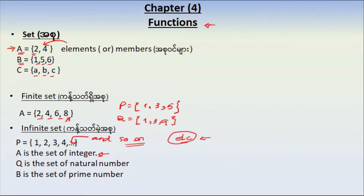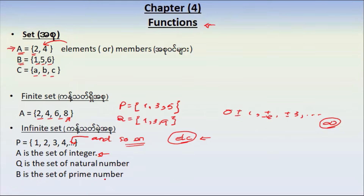A is equal to {0, ±1, ±2, ±3, ...}. A is the set of integers. Q is the set of natural numbers: {1, 2, 3, 4, ...}. B is the set of prime numbers: {1, 3, 5, 7, 11, ...}.